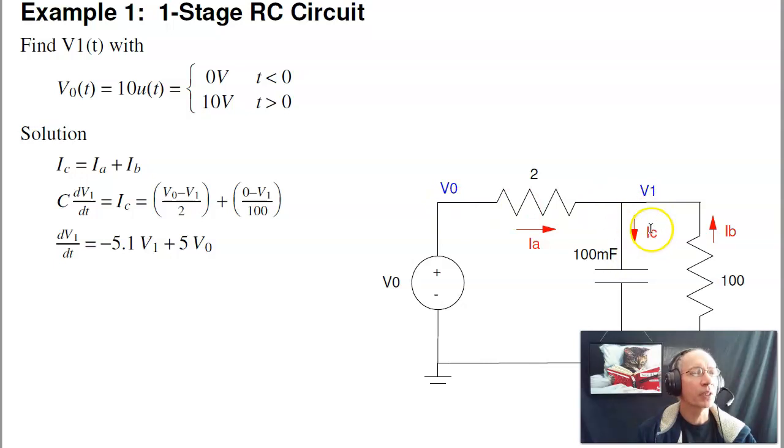To do that, I want to find the current through the capacitor because i is c dv/dt. I'll then integrate. To find ic, ic is ia plus ib, which is V0 minus V1 over 2 plus 0 minus V1 over 100. That's c dv/dt. Solve for dv/dt, and I get this differential equation. So that's what I want to integrate.